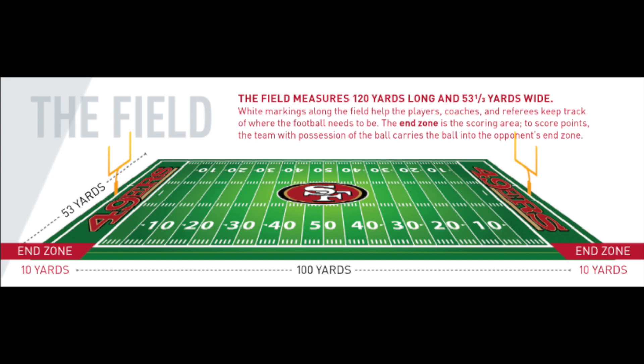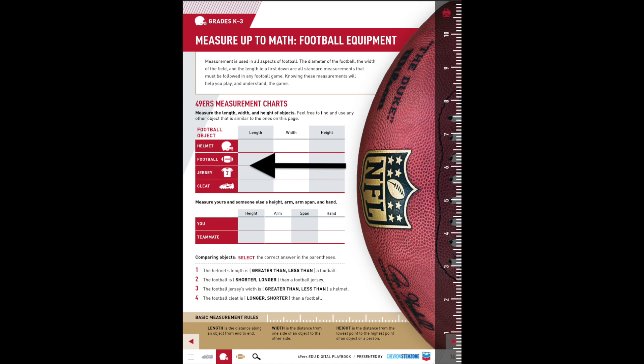Measurement is used throughout the game of football. Besides measuring the equipment and the size of players, we also measure the field. We also need to know how far away from the goal we are — these are very useful measurements when playing the game. The first activity on the page asks you to measure some equipment. If you don't have those particular items, you can find other things around your house that might be similar. For example, if you have a bicycle helmet, you can measure that instead of a football helmet.